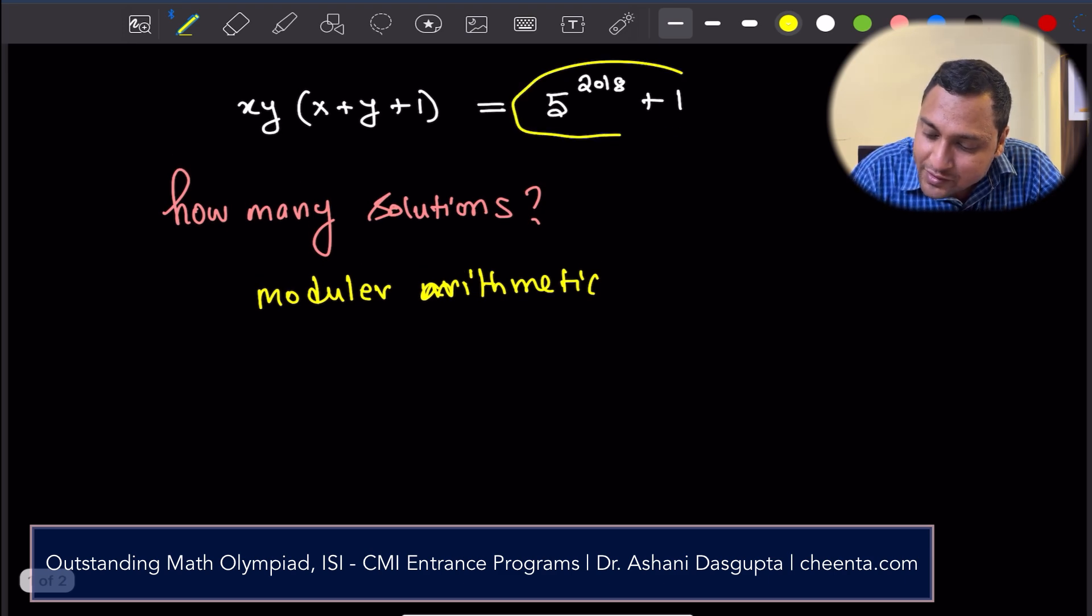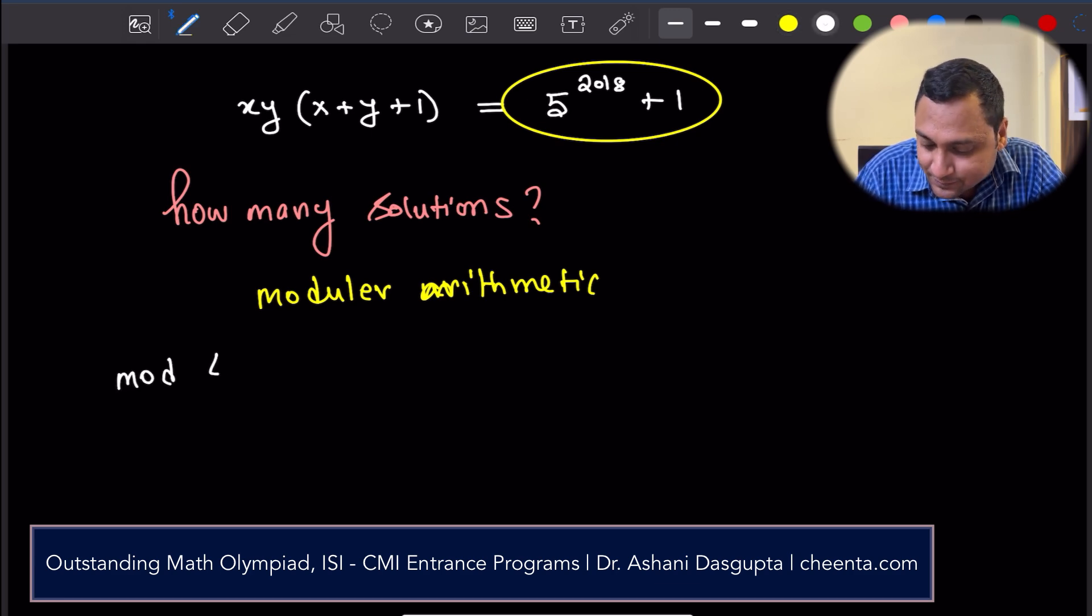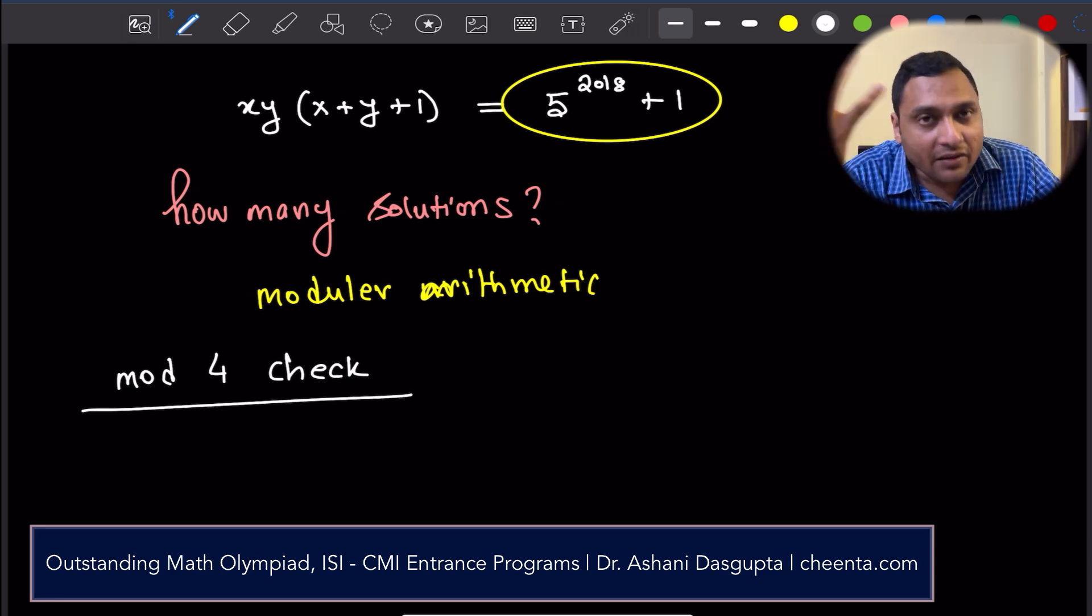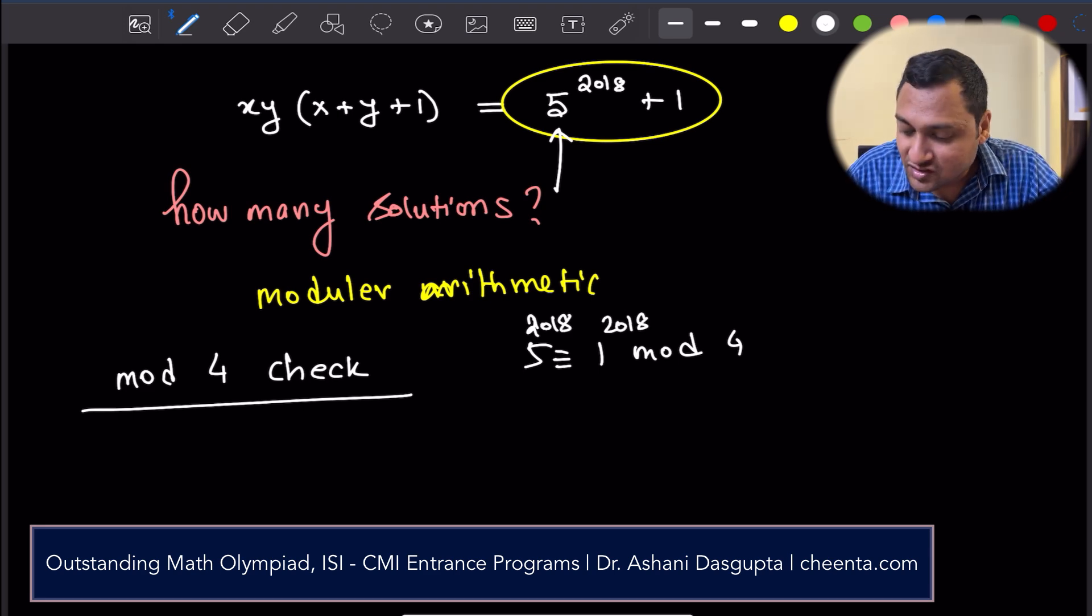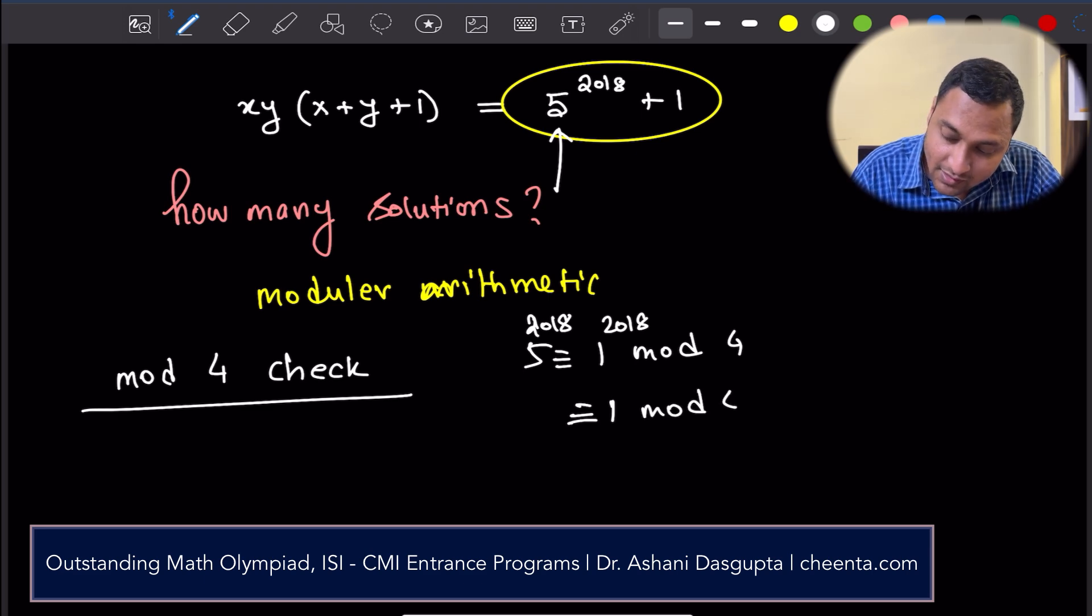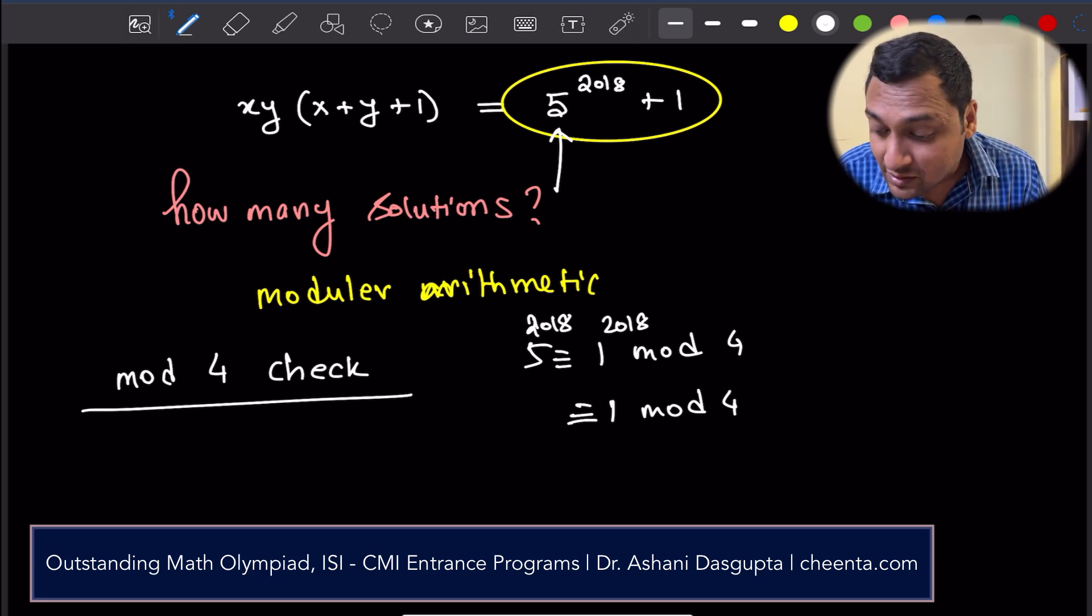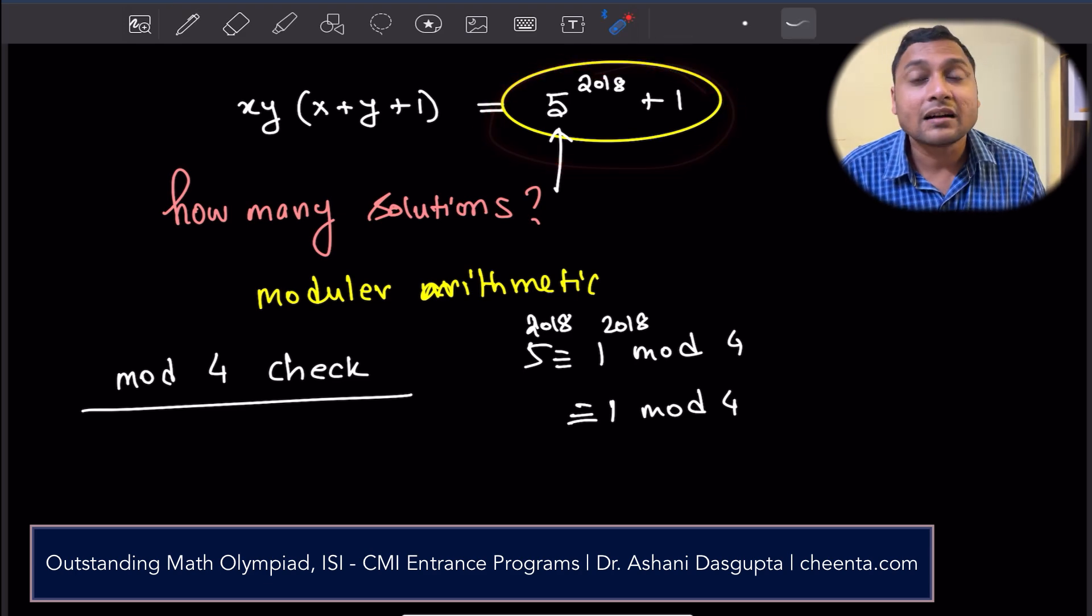The right-hand side, we will do a modular check of 4. Why are we doing this mod 4 check? There are a variety of reasons. It comes with experience really. But if you look, 5 is obviously congruent to 1 mod 4. So, 5 to the power to however much is 1 to the power that thing mod 4. And that's just 1 mod 4. So, it is natural to try and experiment with modular 4 because the right-hand side becomes much more simplified.